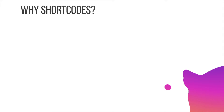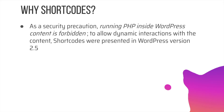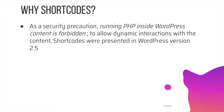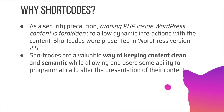Now that we know what shortcodes and macros are, let's discuss why we even need shortcodes. As a security precaution, running PHP inside WordPress content is forbidden. So to allow dynamic interactions with the content, shortcodes were introduced in version 2.5 of WordPress. They're a valuable way of keeping content clean and semantic while allowing end users some ability to programmatically alter the presentation. Inside the callback function you have options to add attributes, modify the content, and present it the way you want.